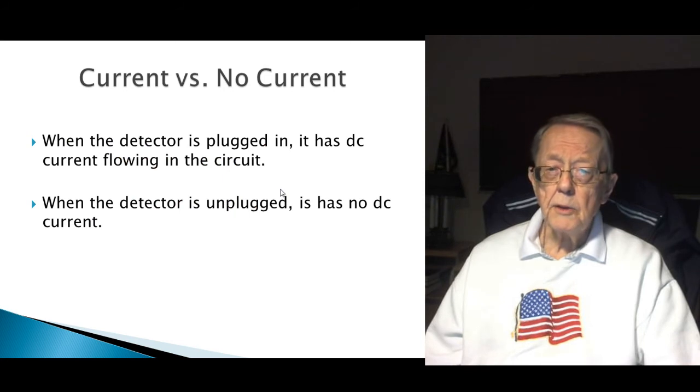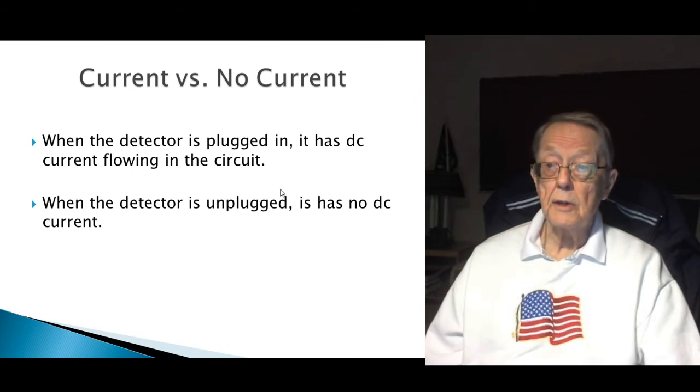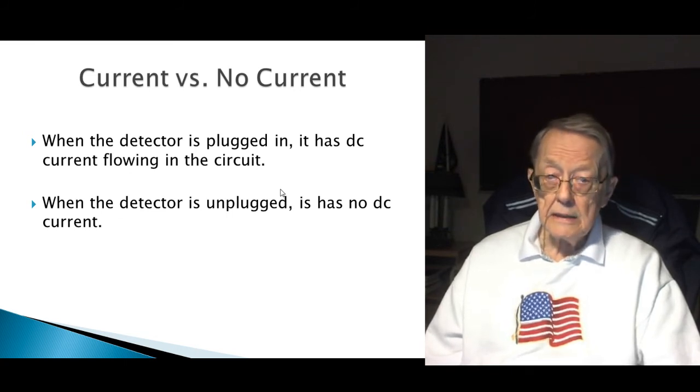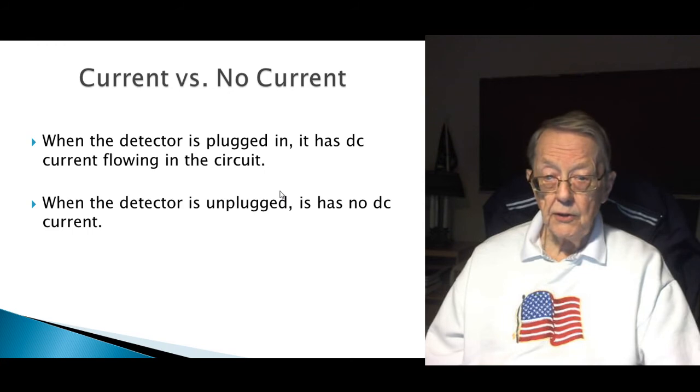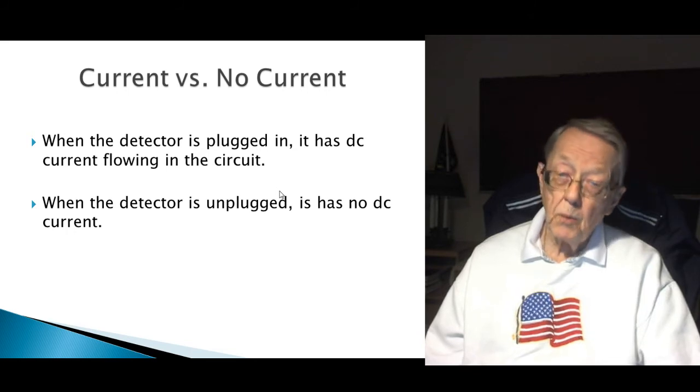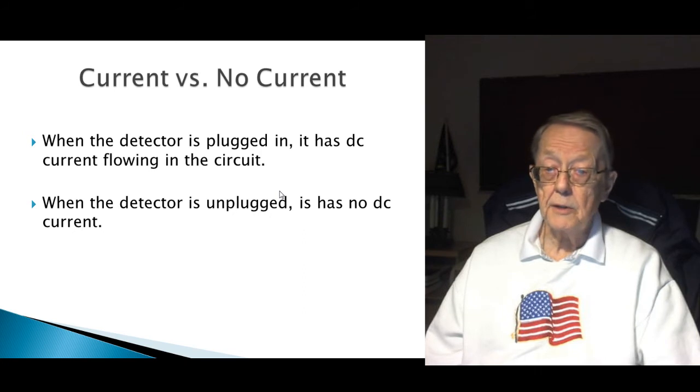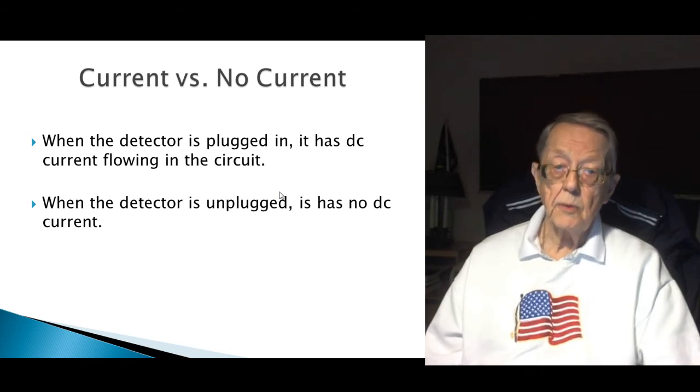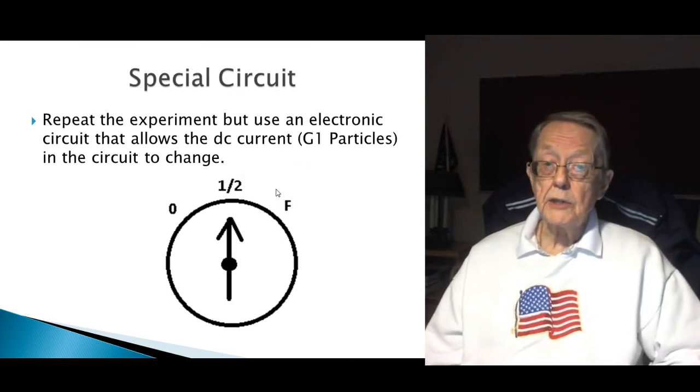Now, one of the things to really - this is the key. This is the key to the whole problem. It's - for an electrical engineer like myself, it shouts at you. When the detector is plugged in, it has DC current flowing in the circuit. Those lasers work on DC. You have a laser pointer, it's got a battery in it. It's a DC current flowing through. Even if you plug it in the wall, it's converted to DC and the DC current flows. When the detector is unplugged, it has no current. So we have current versus no current as the clue.